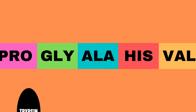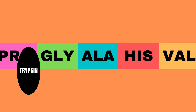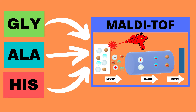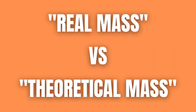Peptide mass fingerprinting works by using a cleaving enzyme such as trypsin to cut the protein of interest into smaller fragments, or peptides. One can then use MALDI-TOF to establish a mass-to-charge ratio, also known as m/z ratio, for these peptides, which can be compared to the theoretical masses of these same protein peptides in order to find a match between the two.